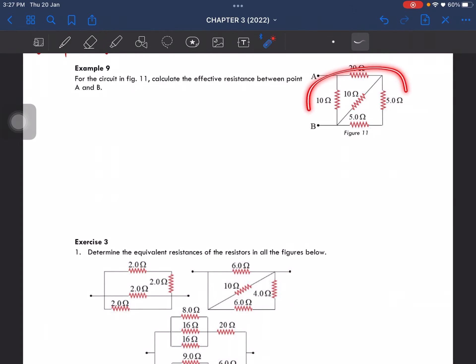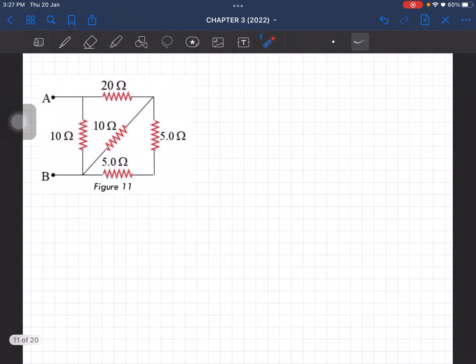Example number 9. So for the circuit, we have to calculate the effective resistance between point A and point B. So we are gonna simplify the circuit towards point A and point B here.